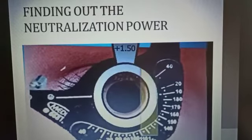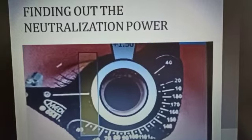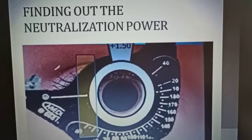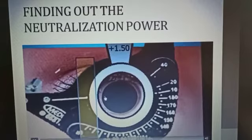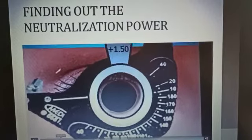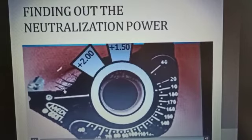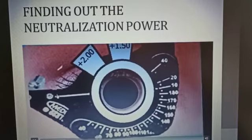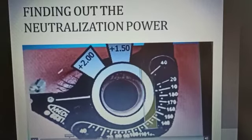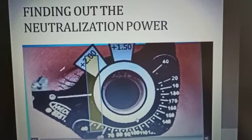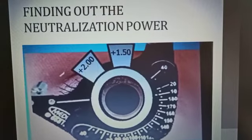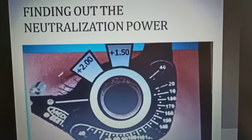Now we have to see the reflex. Here you can see the reflex is with movement. Now what we have to do is add plus spherical lenses — convex lenses. Here we have added plus 2 convex lenses. Now we have to check the reflex again. It is still with movement, but you can see the reflex inside is a bit wider than the previous one. It means that we are closer to our neutralization point, but the whole pupil is not yet filled, so we have to proceed with a higher power.